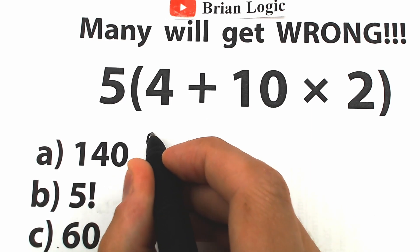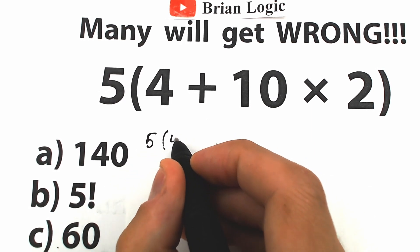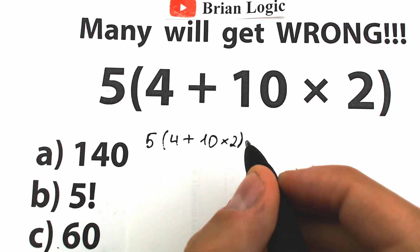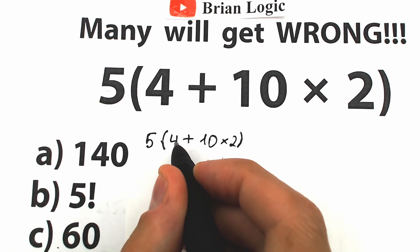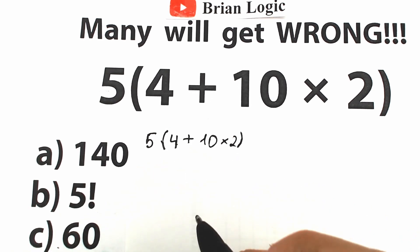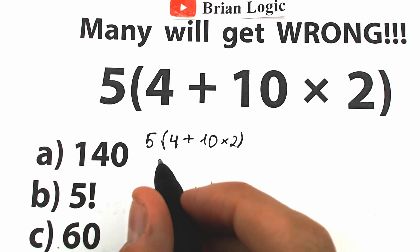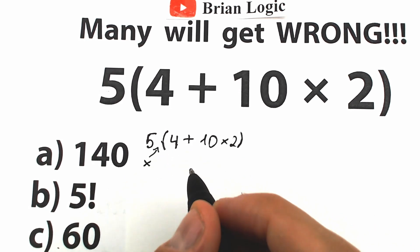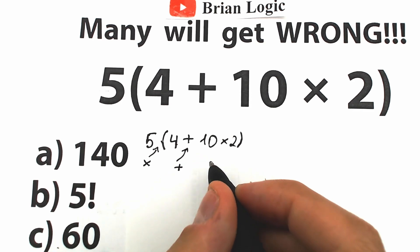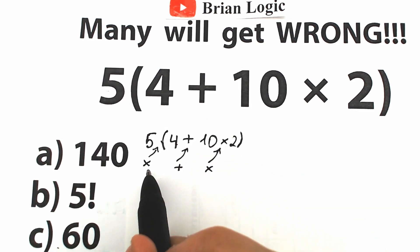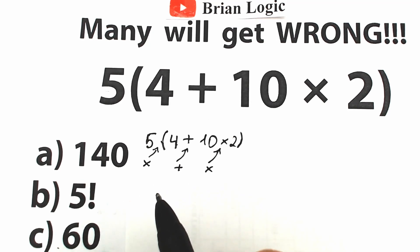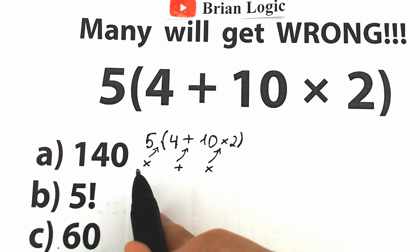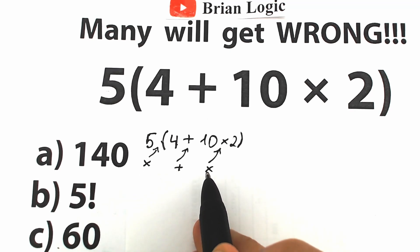So what do we have right here? We have 5, and inside parentheses we have 4 plus 10 times 2. I want to rewrite it here because I'm going to explain how to solve this correctly. A lot of students are confused because between 5 and 4 we have a multiplication sign, then an addition sign, and then one more multiplication sign. We have three mathematical operations: multiplication, addition, and multiplication once more.